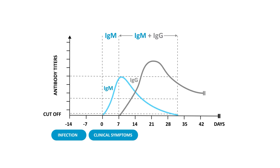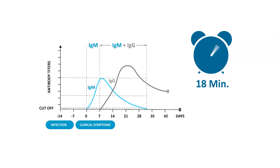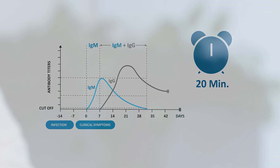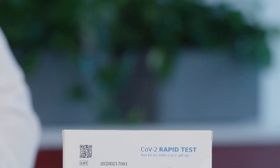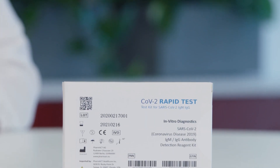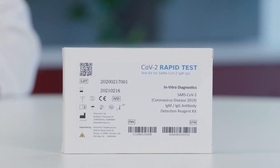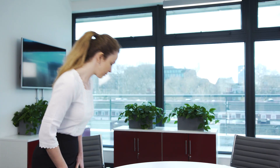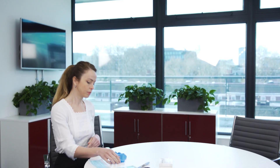By measuring the concentration of these particular antibodies, the Cov2 rapid test can determine in 20 minutes whether a patient experiencing symptoms has been exposed to the virus within the past 4 to 24 days or longer.